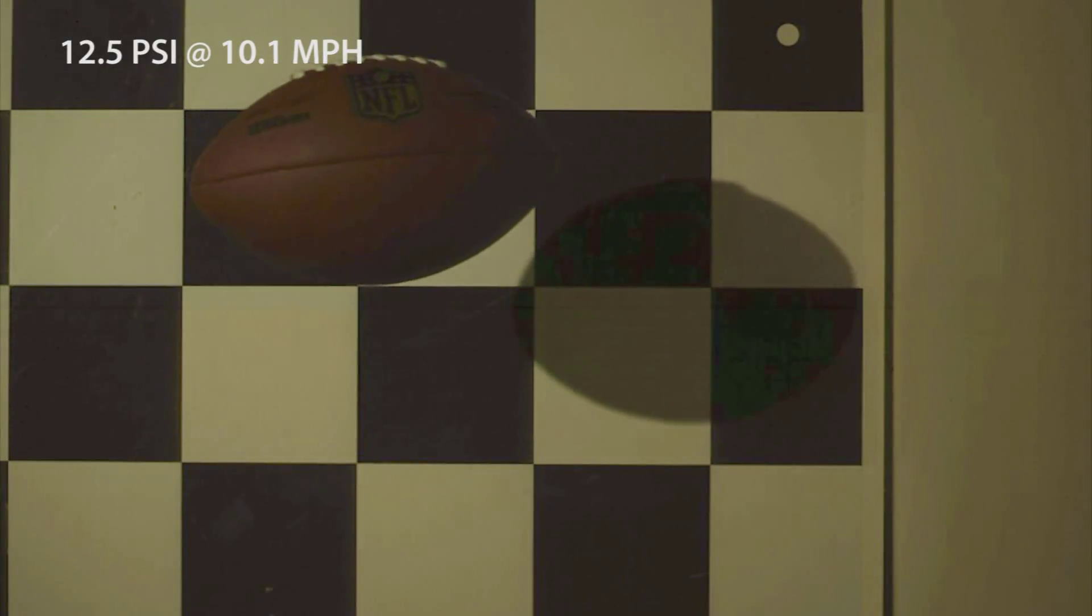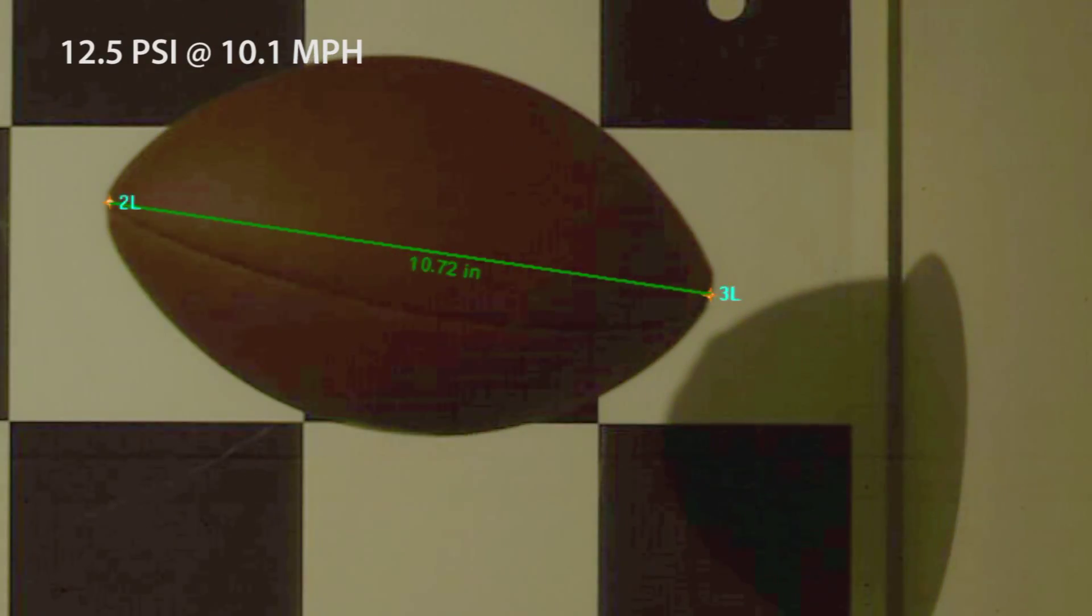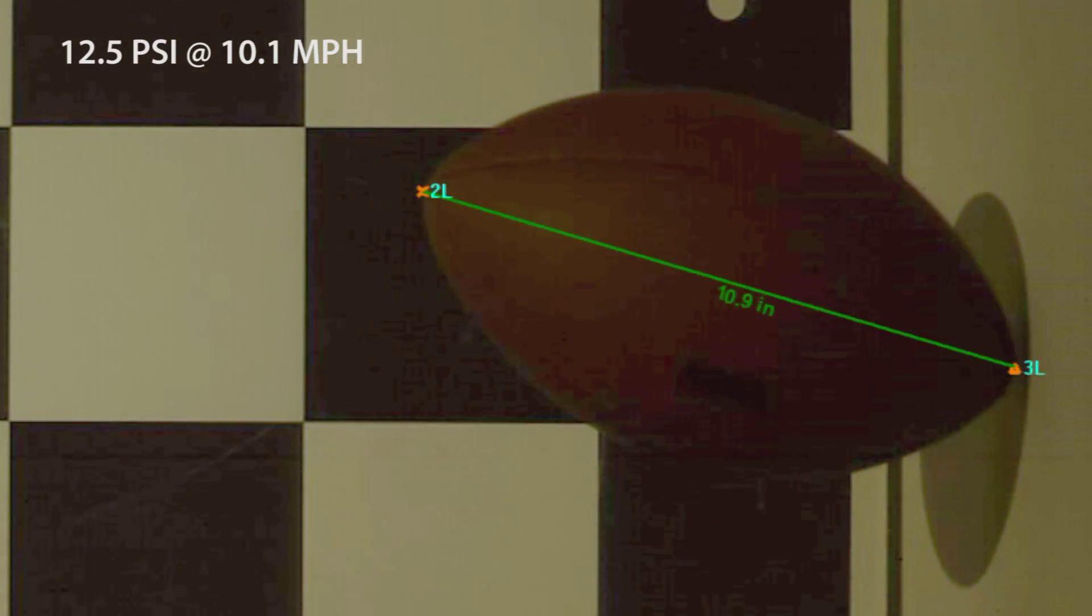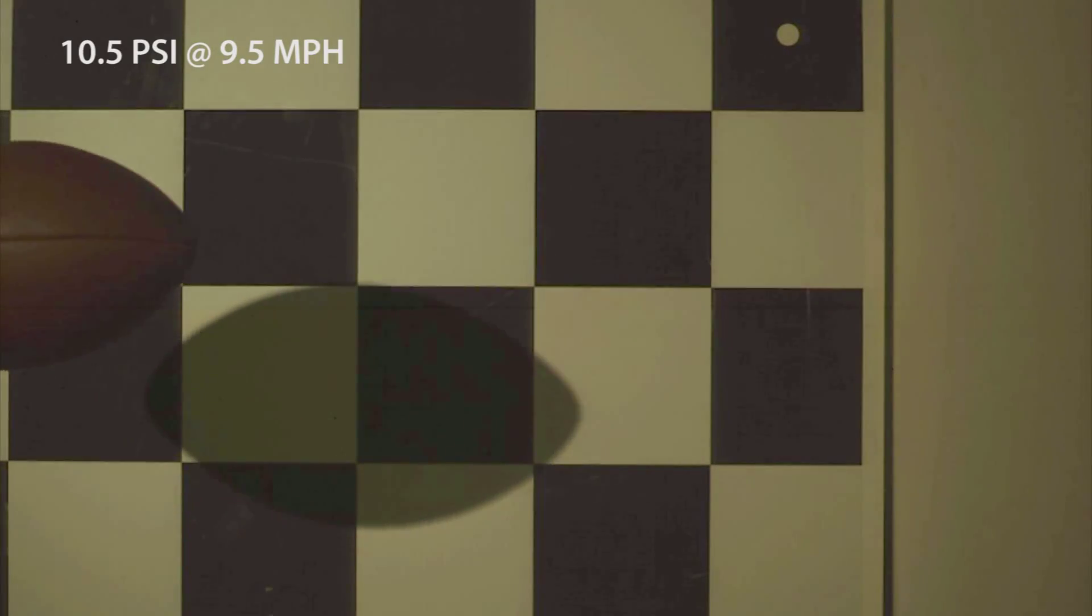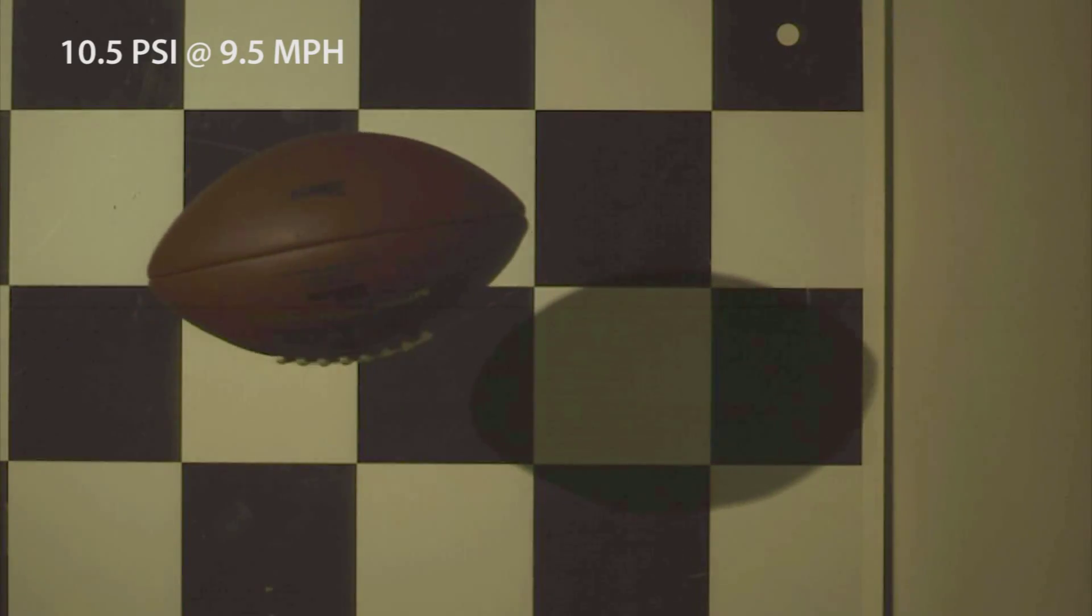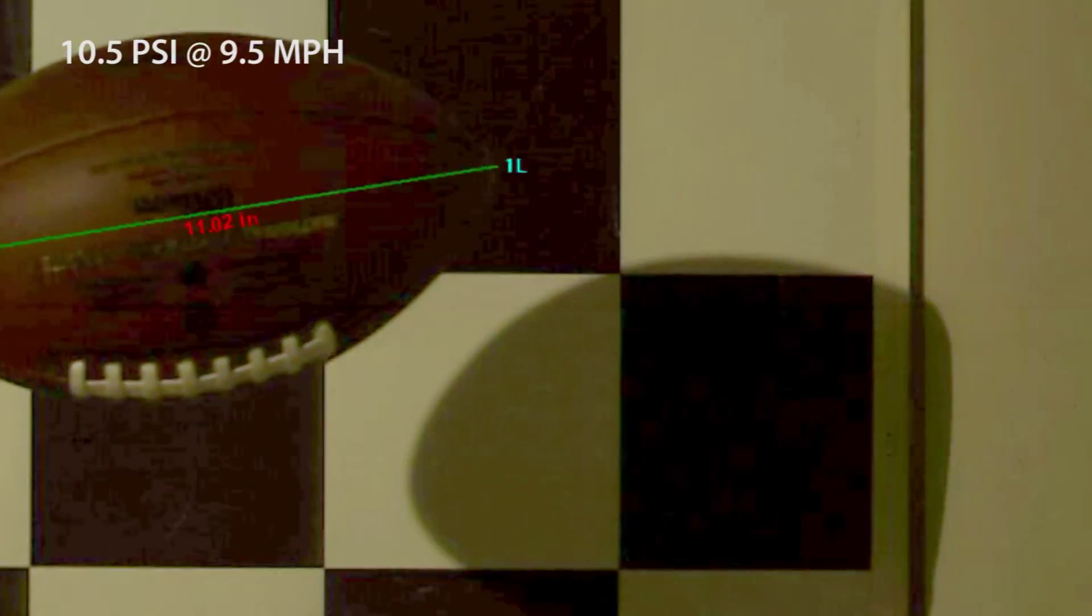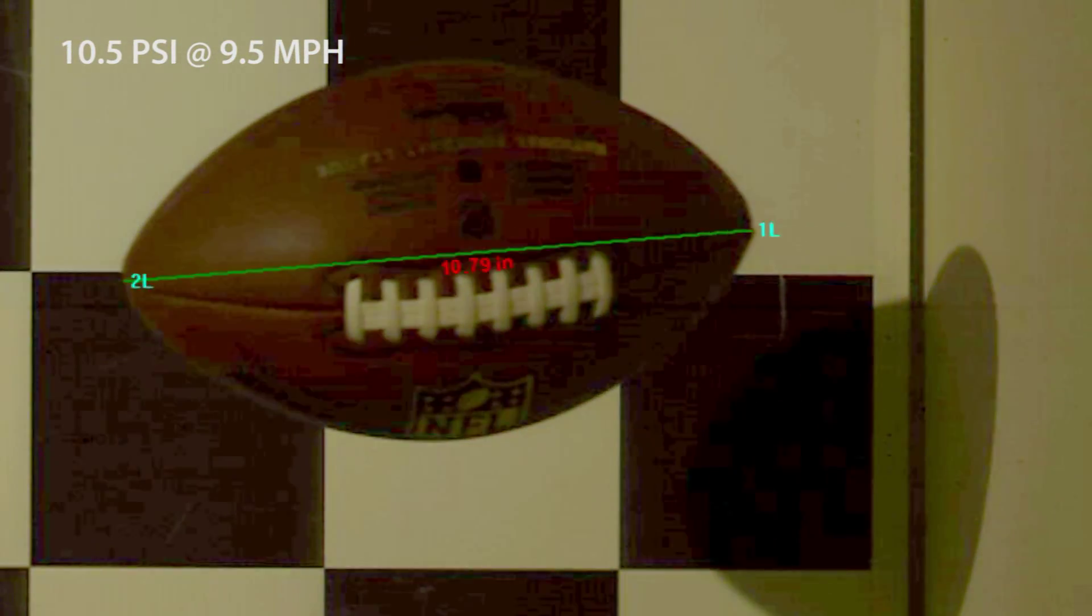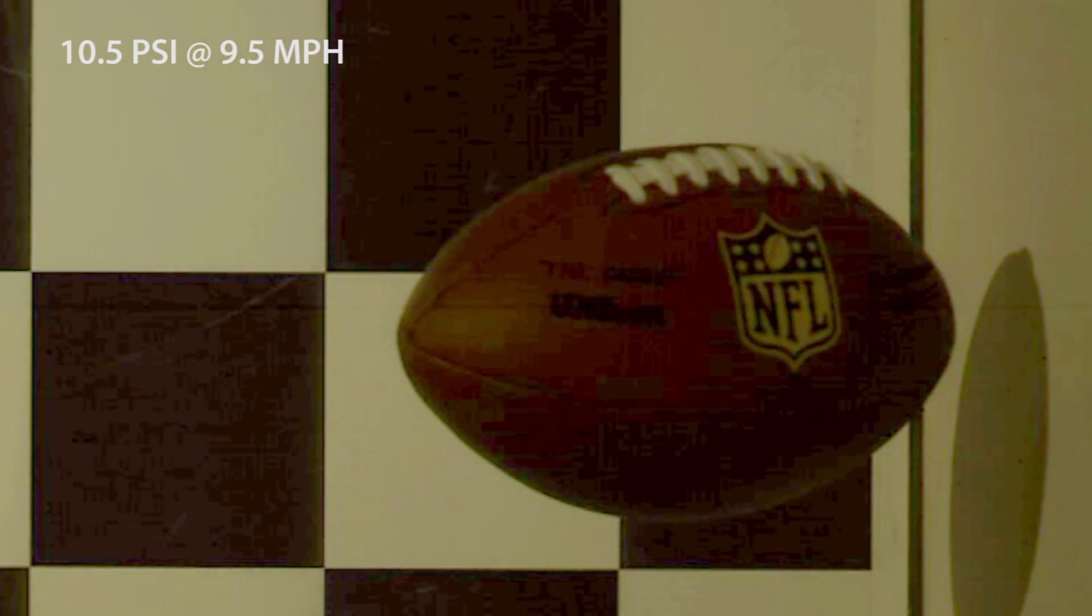A football inflated to 12.5 pounds per square inch when launched at 10 miles per hour will compact to 10.4 inches, whereas a ball inflated to 10.5 pounds per square inch also launching at 10 miles per hour will compact twice that much. The ball will go down to 9.8 inches.